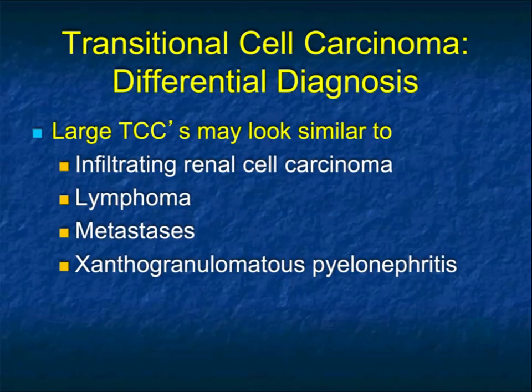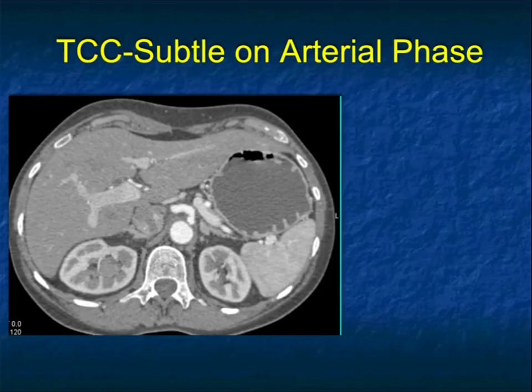When you have large TCCs, the main issue is sometimes separating them from an infiltrating renal cell carcinoma, lymphoma, metastases, and occasionally — though rarely — XGP, because XGP typically has large staghorn calculi. On early phase imaging, TCCs are easy to miss.